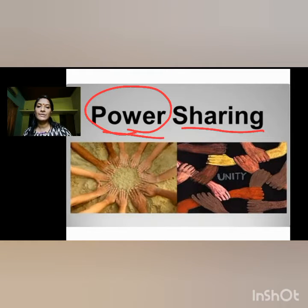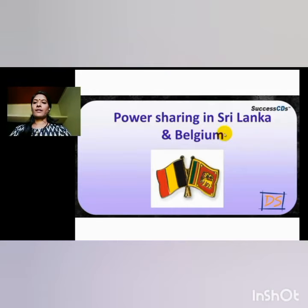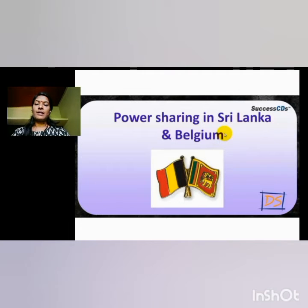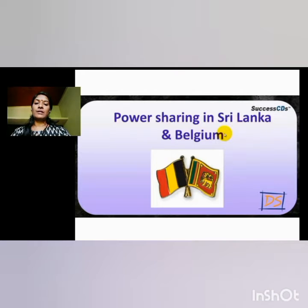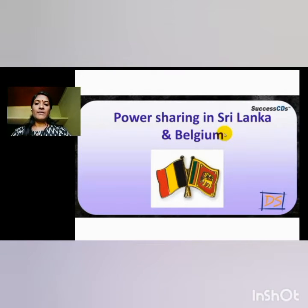In this chapter, we will see how different countries share power with others. We should share power equally among the people. In a country we can see different types of people — based on religion, language, and culture. But the country should divide power equally among all people and should not give special consideration to any group. If there is no equal power sharing, there is a chance for social conflict or the country will move towards a civil war. So what happened in Sri Lanka and Belgium? What was the power sharing problem there? With this we will begin our chapter.